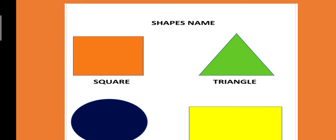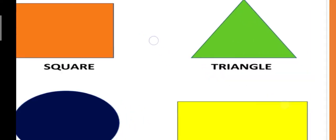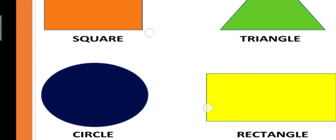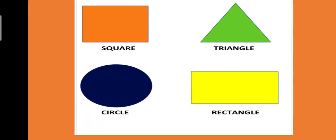Second one is Triangle. Triangle कैसे होता है? त्री कोन होता है, जिसके तीन कोन होते हैं, और तीनों कोन equals होते हैं. Third one is Circle. Circle तो आप लोगों को पता है, इसका मतलब होता है गोल.